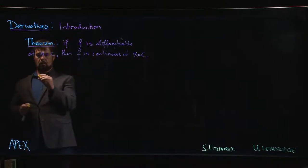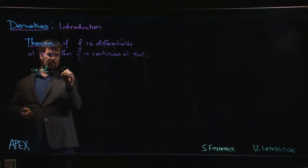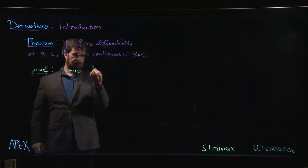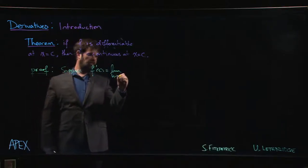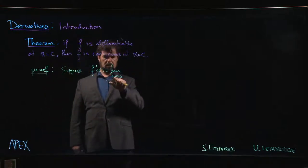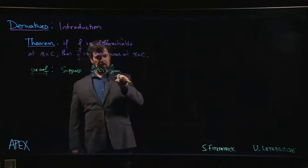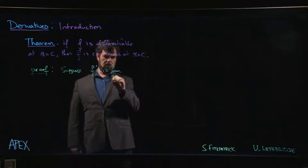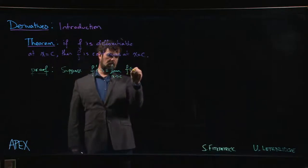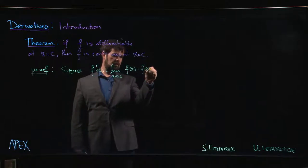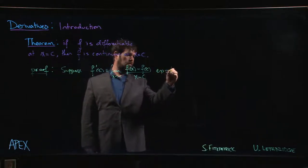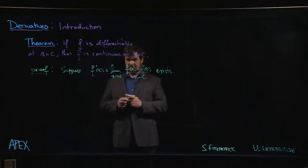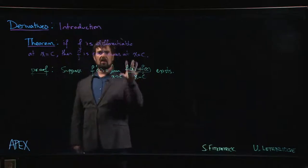So I'm going to start the proof. The first step in proving this is going to be to suppose that f prime of c, which is the limit as h goes to zero, or actually in this case, this is one of these cases where it's probably more convenient to use the other form, the derivative, limit as x approaches c, f of x minus f of c over x minus c. So we're going to assume that this exists.